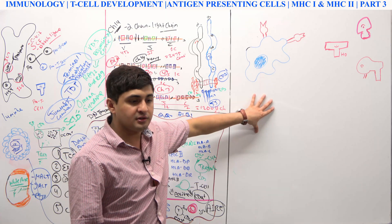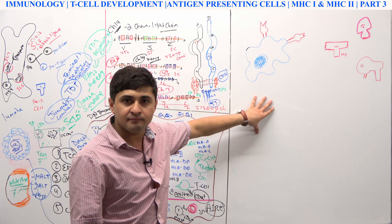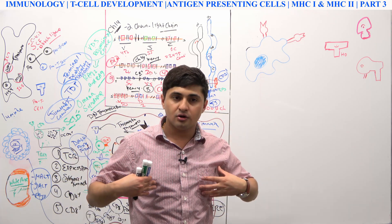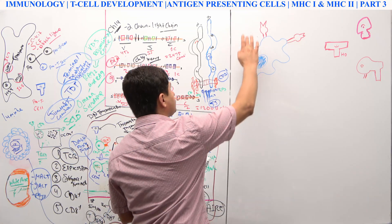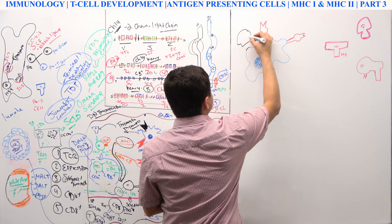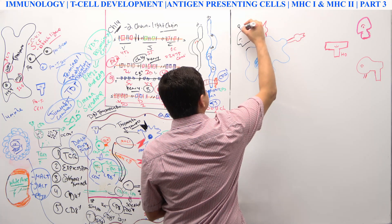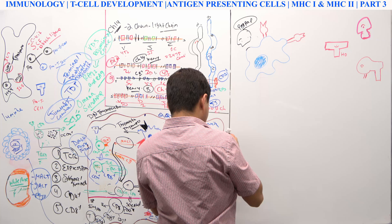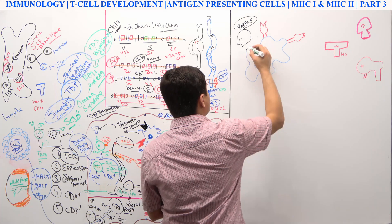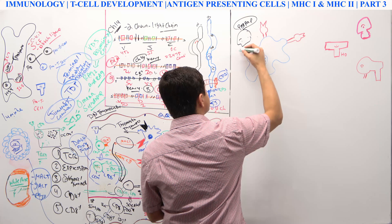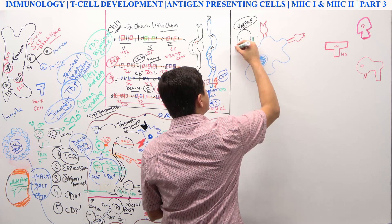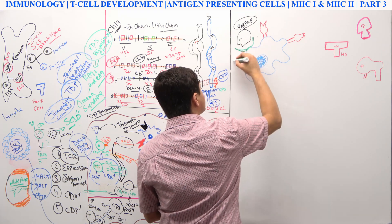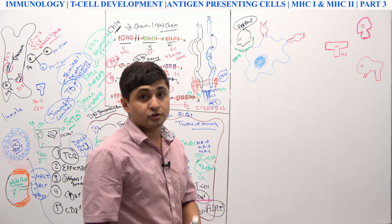Let's talk about how T cells are going to get activated and how they will respond to fight infection. Let's say a pathogen comes in right here. You guys remember from the innate immune system there's something called PAMP — pattern-associated molecular pattern. Antigen presenting cells like dendritic cells and macrophages will recognize this microbe.